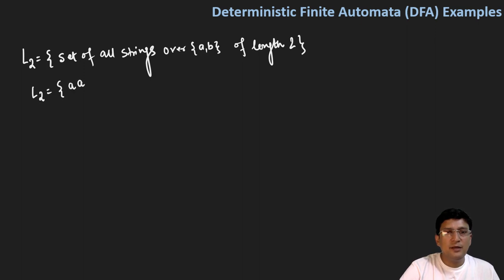So this can be aa, this can be ab, ba, or bb. So there are only 4 elements in this language, or 4 strings that will be in this language.